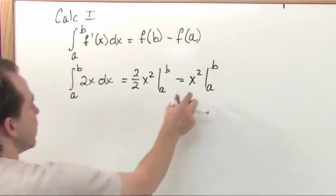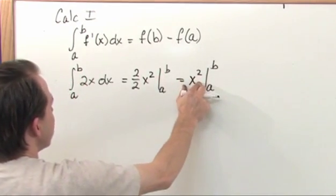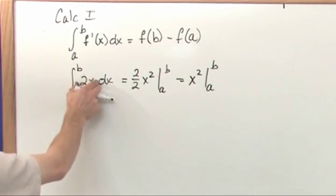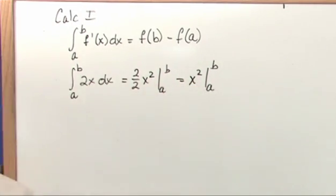So notice what we did is the original function f is x squared. The derivative of this is 2x, so we really integrated the derivative of this function. We integrated the derivative of this function.